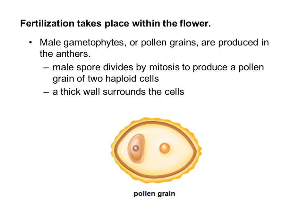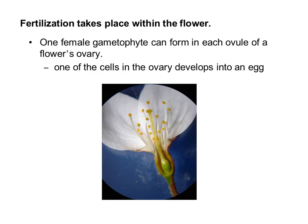The male gametophyte, or pollen grain, is produced in the anthers. Male spores divide by mitosis to produce a pollen grain of two haploid cells, and a thick wall surrounds the cell. So there are actually two haploid cells inside, surrounded by a thick protective wall. One female gametophyte can form in each ovule of a flower's ovary, and one of the cells in the ovary will then develop into an egg.